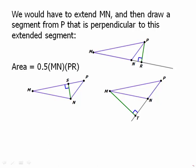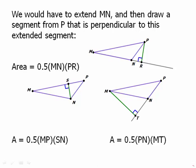Similarly, we can draw altitudes from other vertices. Drawing one from N just intersects the opposite side — that's easy. Drawing one from M requires extending PN the other way, and the altitude intersects that extended line. For the second triangle with altitude from N, the area is ½ · MP · SN. For the third triangle, the area is ½ · PN · MT.